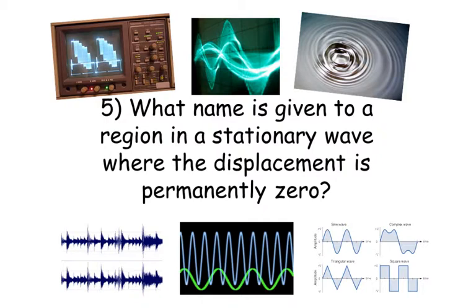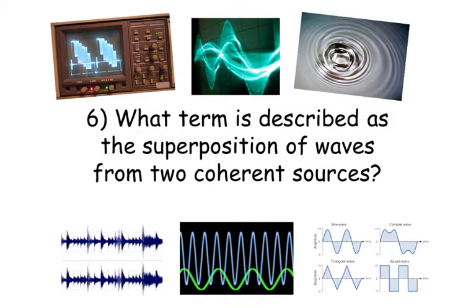Number 5. What name is given to a region in a stationary wave where the displacement is permanently zero? Question 6. What term is described as the superposition of waves from two coherent sources?